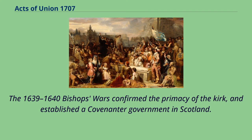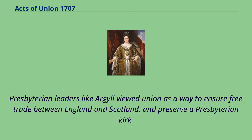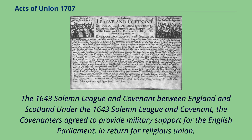The 1639–1640 Bishops' Wars confirmed the primacy of the Kirk and established a Covenanter government in Scotland. The Scots remained neutral when the First English Civil War began in 1642, before becoming concerned at the impact on Scotland of a Royalist victory. Presbyterian leaders like Argyle viewed union as a way to ensure free trade between England and Scotland and preserve a Presbyterian Kirk.